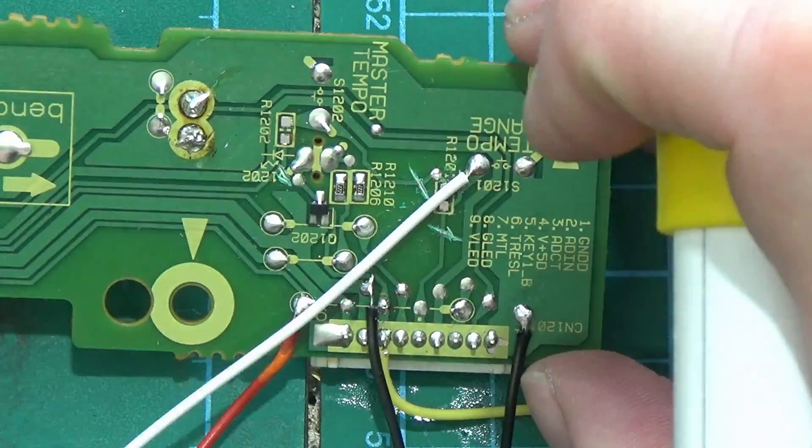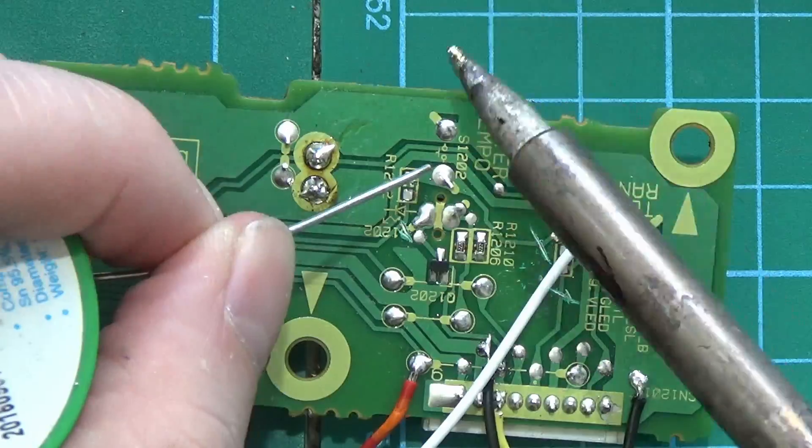Now we're going to solder the wires onto the positive legs of the switches. They're exactly the same as we did before.